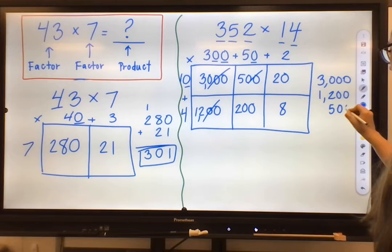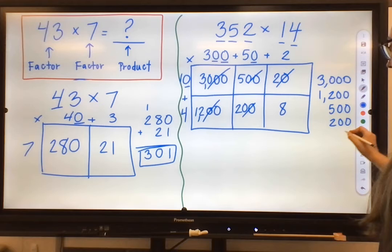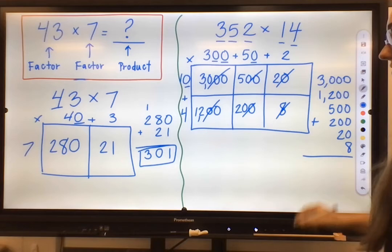Next largest, 500. Next largest, 200. Next largest, 20. And then the least largest is our 8.